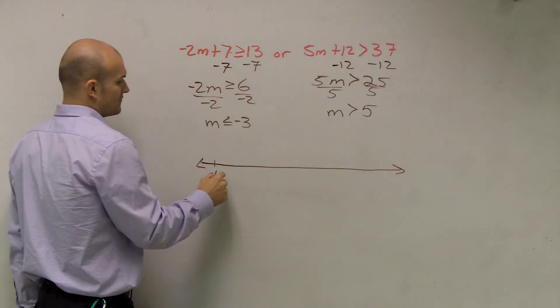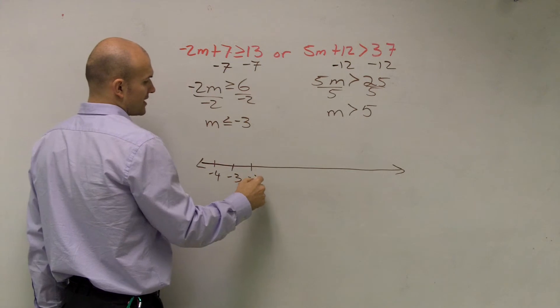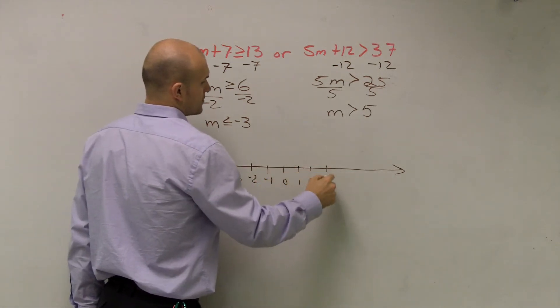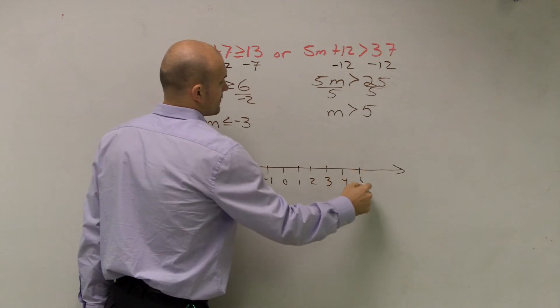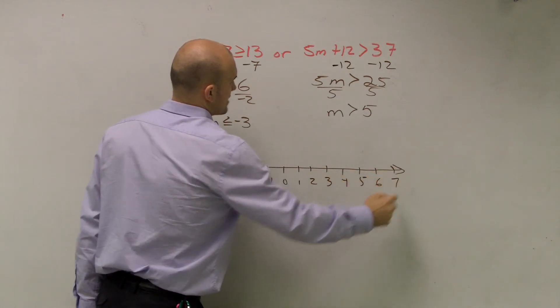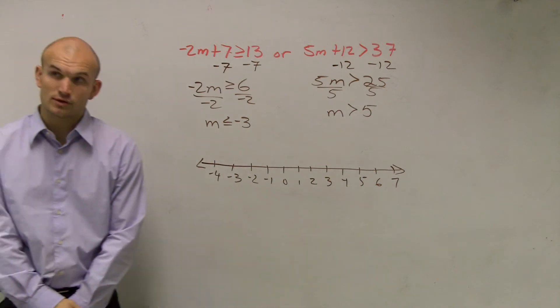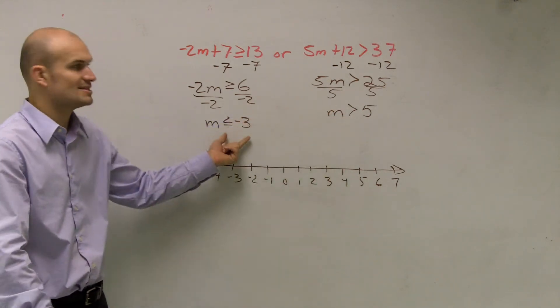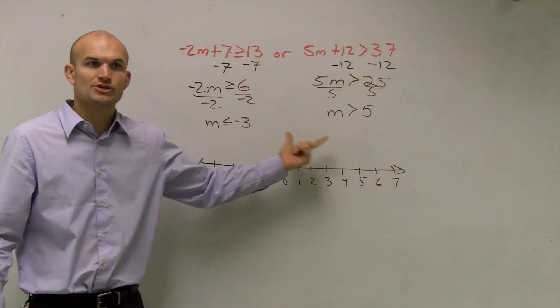So let's do negative 4, negative 3, negative 2, negative 1, 0, 1, 2, 3, 4, 5, 6, 7. So now my number line includes both these numbers. The reason why you want to make sure both these numbers are included is because these are what you're going to go off of. So I'm going to make a dot at negative 3 and at 5.